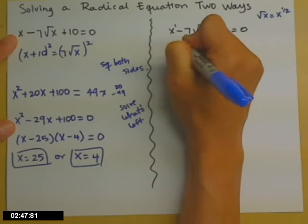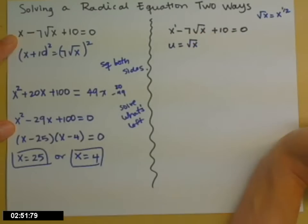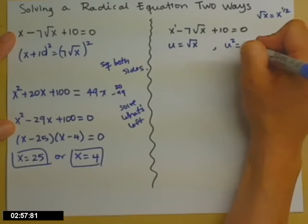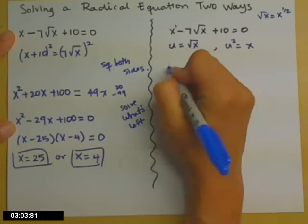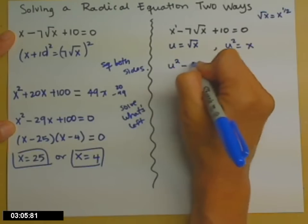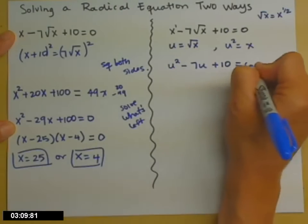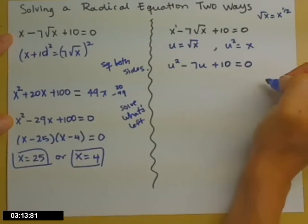That means we can use this u substitution. So we're going to let u be the smaller one. u is going to be the square root of x. So that u squared equals x. And now when I rewrite that equation in terms of u, I'm going to have u squared minus 7u plus 10 equals 0. Now it's not quadratic-like, it's quadratic, and we know how to solve those.